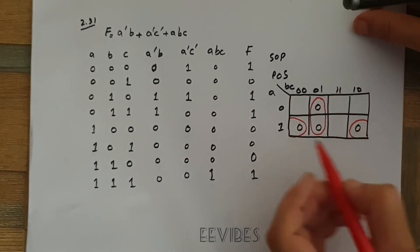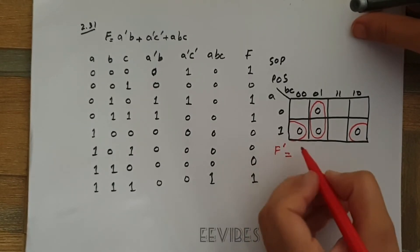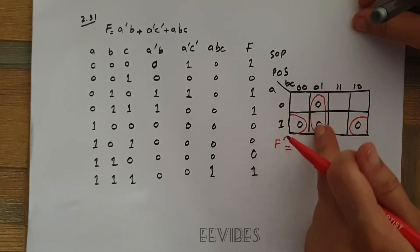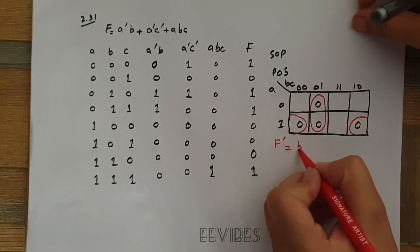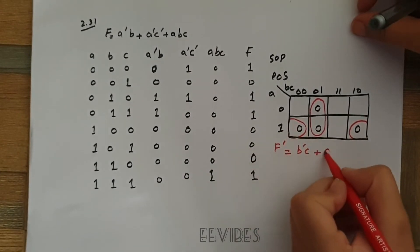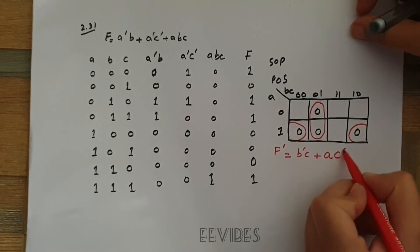And write down the function expression, or function complement basically, because 0 represents the complement of the function. When you combine these two adjacent squares you will get the expression b complement c, and then plus you can see a remains as it is and here you will be writing it as c complement.